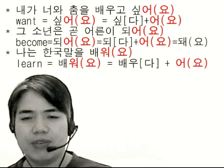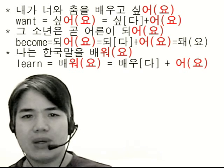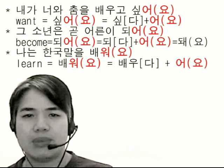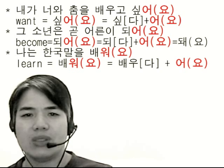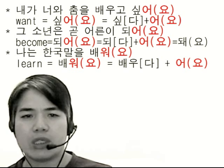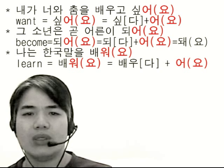Let's look at the verb class endings in the previous examples. First: 내가 너와 춤을 배우고 싶어요. 싶어요 means 'want.' The verb root of 'want' is 싶다, so we drop 다 and add 어요. 어 is a simple indicative class ending, giving us 싶어요. Second: 그 소년은 곧 어른이 되어요. 되어요 means 'become.' The verb root of 'become' is 되다, so we drop 다 and add 어요 — 되어요. We can also say 돼요 instead of 되어요.